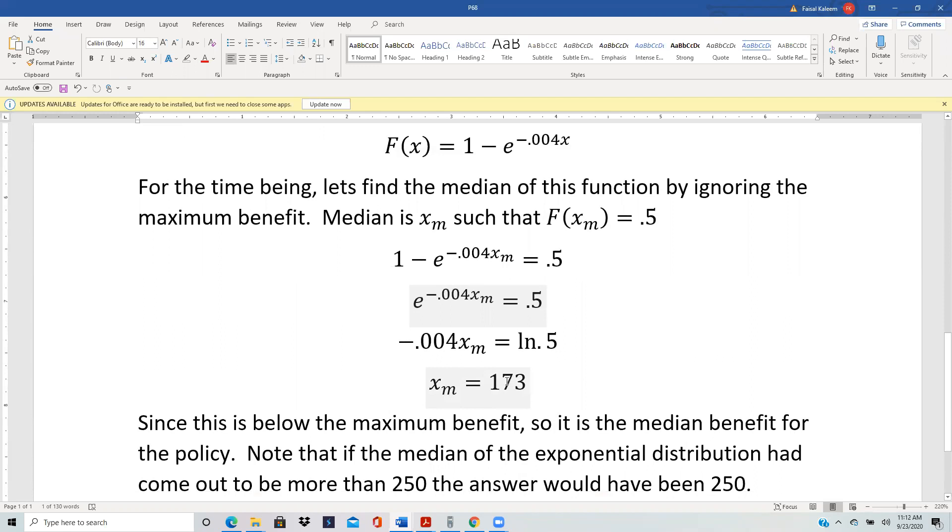So it ended up being less than the maximum benefit of 250. So this is just like saying that you will get either the median or you will get a maximum of 250 as a benefit. So the median, whenever the median comes out to be less than the maximum cap in these scenarios, then the median of that exponential is also the median of the benefit.